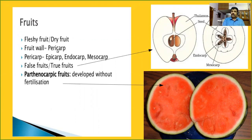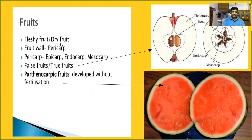The fruit wall is collectively called the pericarp. The pericarp has three regions: the outermost epicarp, the middle mesocarp, and the innermost endocarp. The fruit may be either fleshy or dry. Some fruits like banana and orange are considered fleshy fruits.